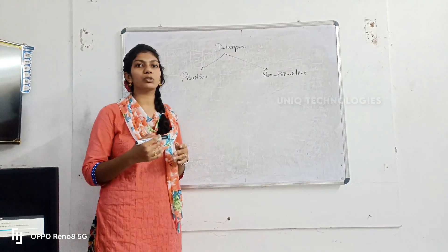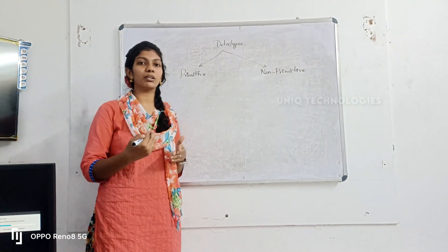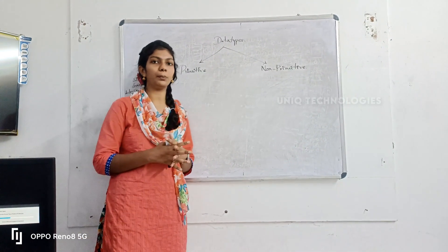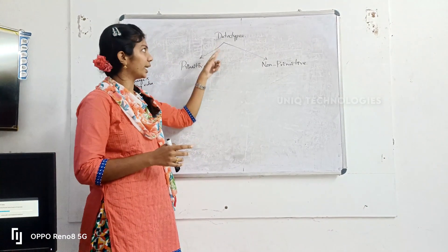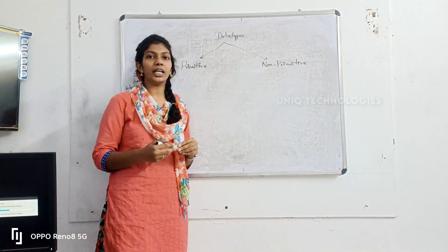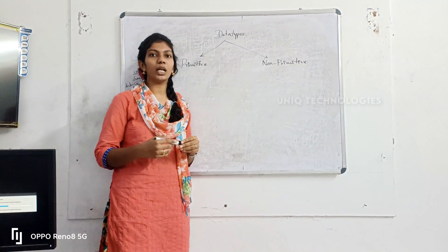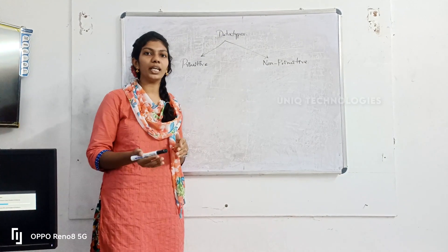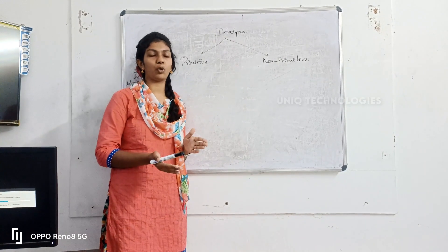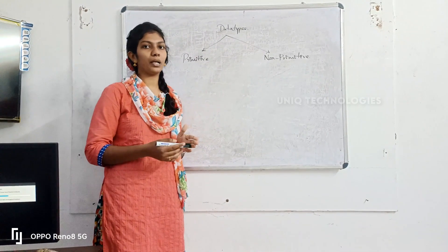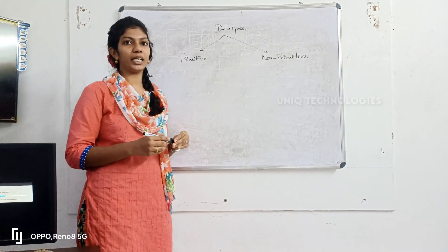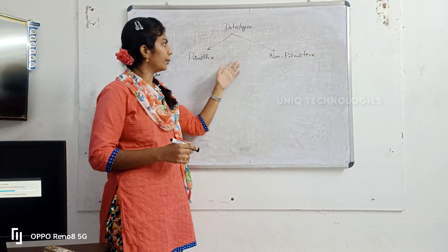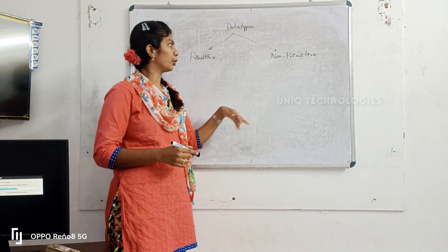Today's class, we will cover data types. So, a data type defines the type of data. There are two categories: primitive and non-primitive.